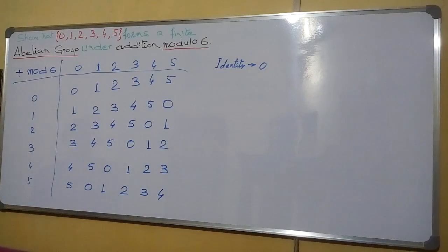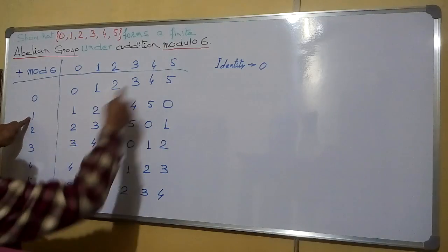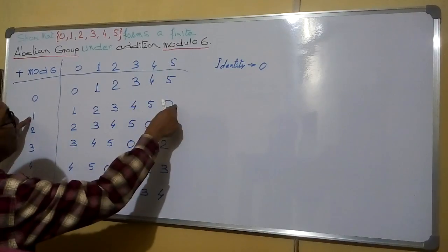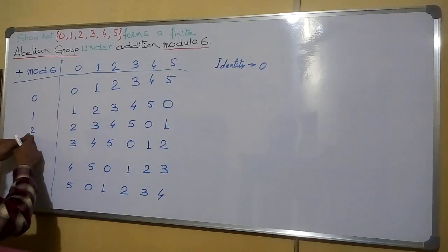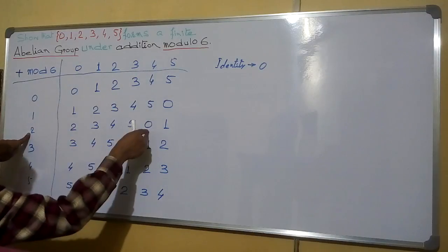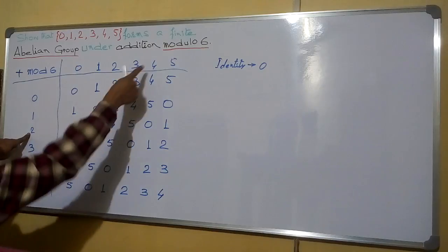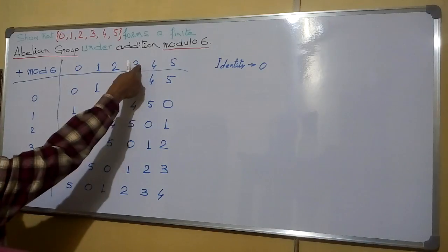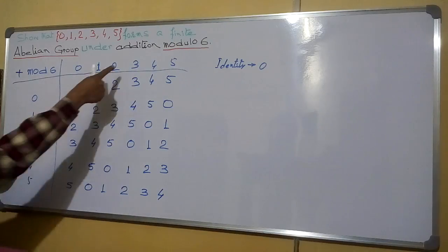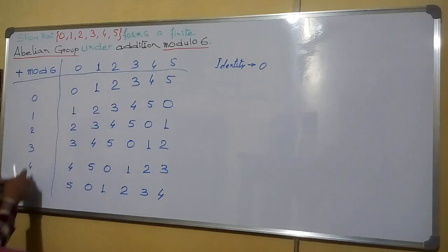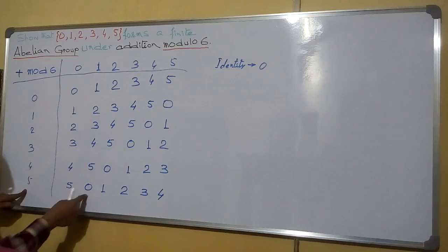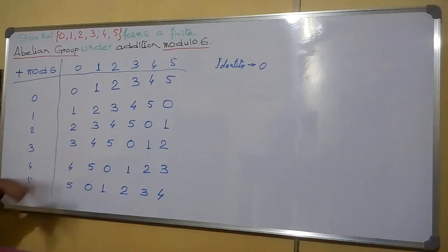Now we will show the inverse. An inverse is the element with which we perform the operation to get the identity element. 1 plus 5 modulo 6 gives 0, so the inverse of 1 is 5. 2 plus 4 gives 0, so the inverse of 2 is 4. 3 plus 3 gives 0, so the inverse of 3 is 3. 4 plus 2 gives 0, so 2 is the inverse of 4. 5 plus 1 gives 0, so the inverse of 5 is 1. In this way, all elements have an inverse.